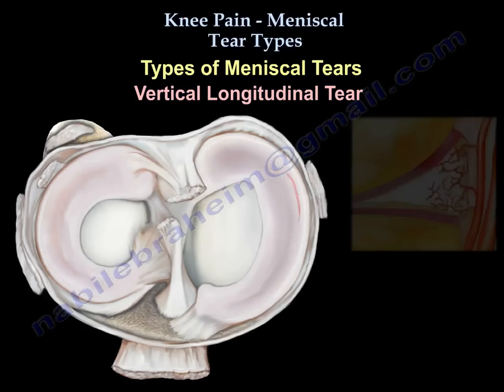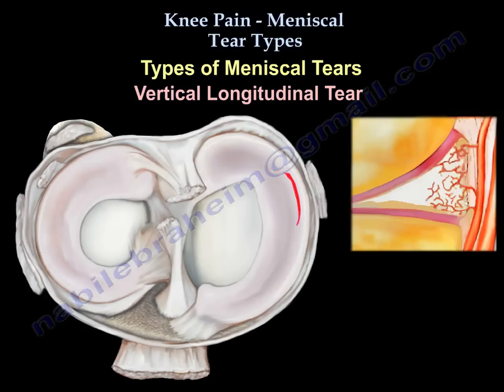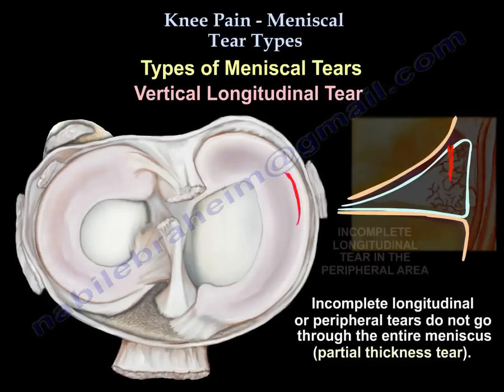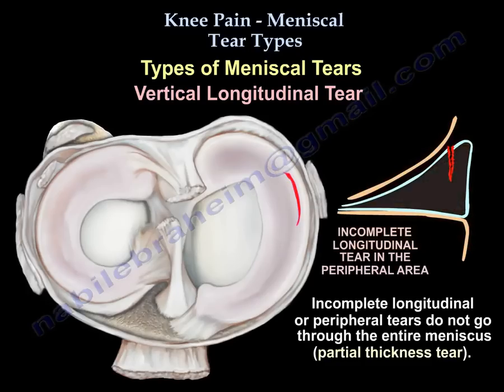There's another peripheral type of meniscal injury called incomplete longitudinal or peripheral tear. It doesn't go through the entire meniscus — it doesn't go through the full thickness of the meniscus.